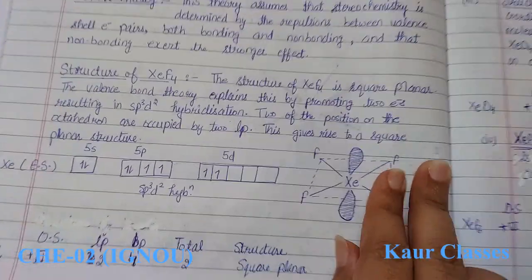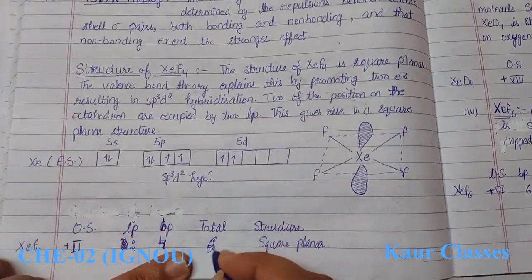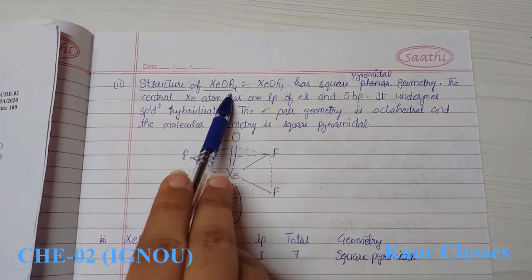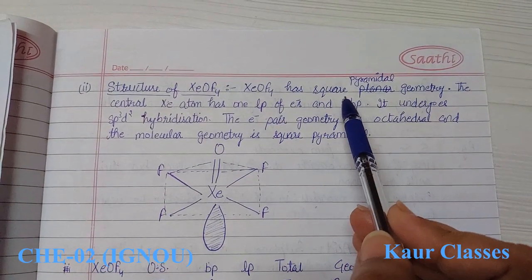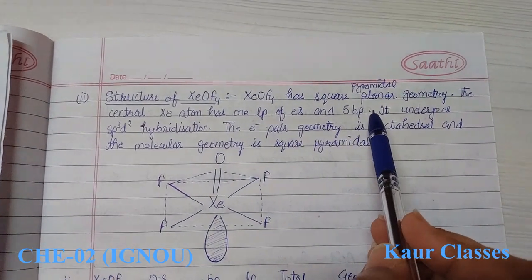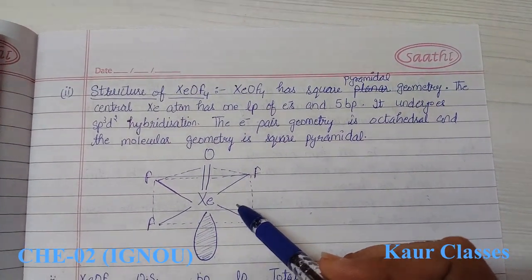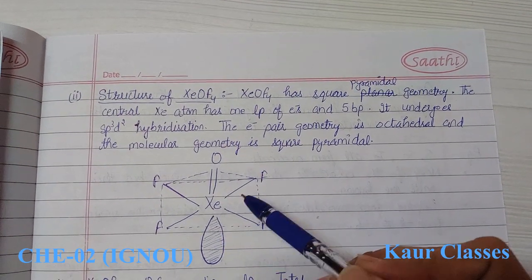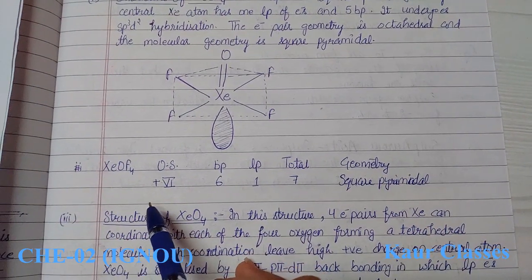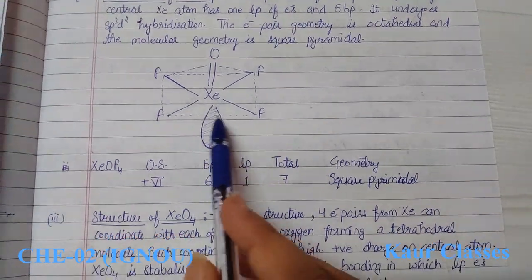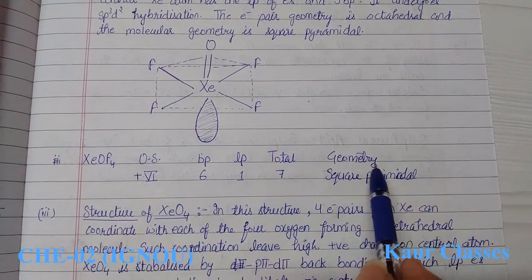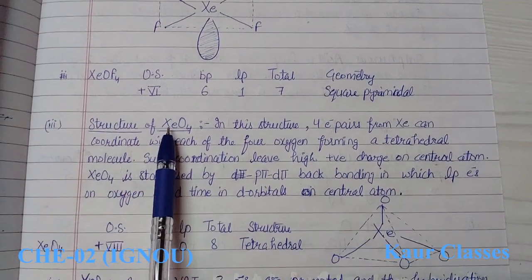The next structure is xenon oxotetrafluoride (XeOF4), which has square pyramidal geometry. The central xenon atom has one lone pair and five bond pairs. The hybridization is sp3d2 with six total electron pairs — five bond pairs and one lone pair. The oxidation state is +6, so the geometry is square pyramidal.